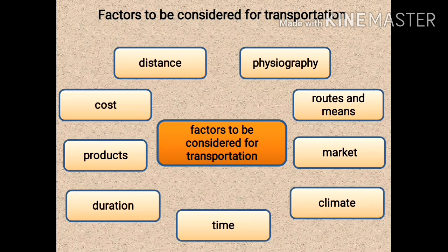The next important factor is routes and means. When transportation is to be carried out, we must decide the means available in that region based on its physiography — whether it is mountainous, desert, plains, or plateau. We also need to find the shortest route among available options, as a shorter route saves both time and fuel. So routes and means is an important factor for transportation.